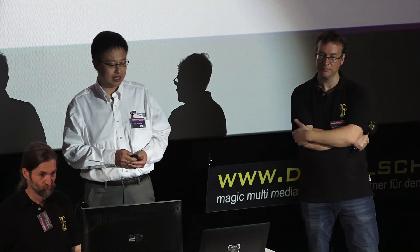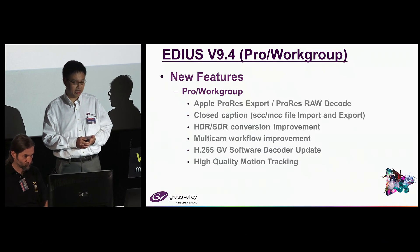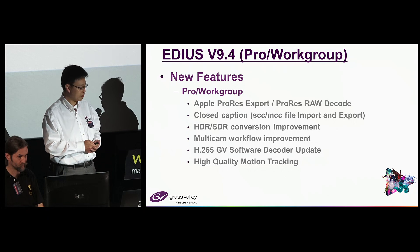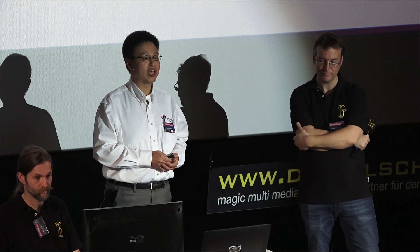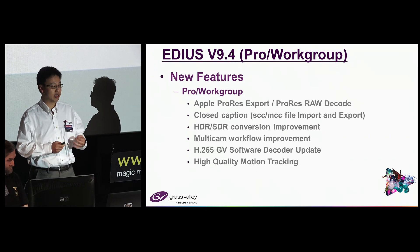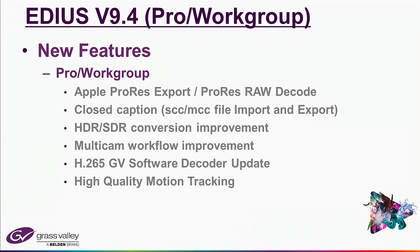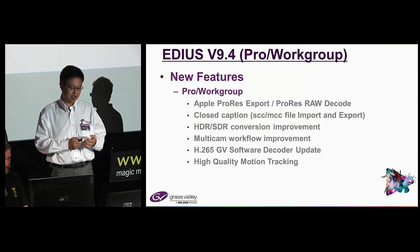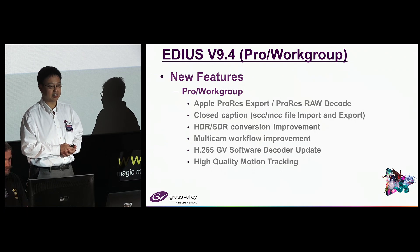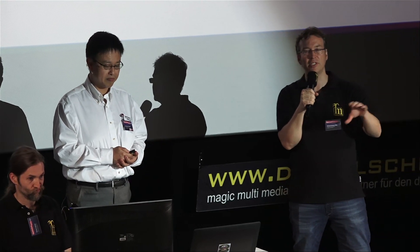The closed caption functionality has been updated to support file import and export, and also burn-in of captions on the video. Subtitles can now be imported and exported as a file and burned into the video. Also supporting a better HDR-SDR workflow — when converting HDR to SDR or vice versa, you'll get a better image with brightness levels automatically adjusted. The primary color correction filter now includes a new function that makes it easier to switch between color spaces.